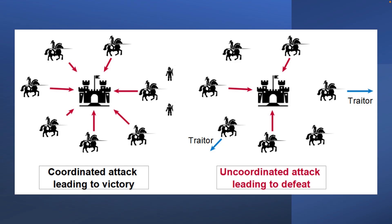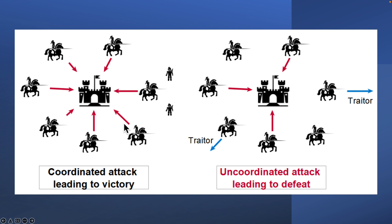The problem occurs in this scenario: a number of generals position their armies outside an enemy city that they want to conquer. They need to choose the time of their attack, and they know they can only be victorious if at least half of them attack at the same time. If they don't coordinate the time of attack well, they are outnumbered and will lose, or they can retreat together to avoid losing their armies.